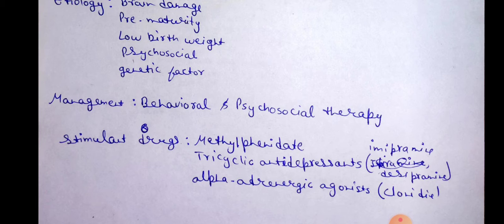Stimulant drugs used include methylphenidate, tricyclic antidepressants like imipramine and desipramine, and alpha-adrenergic agonists like clonidine. These three drug categories are enough to write in exams.